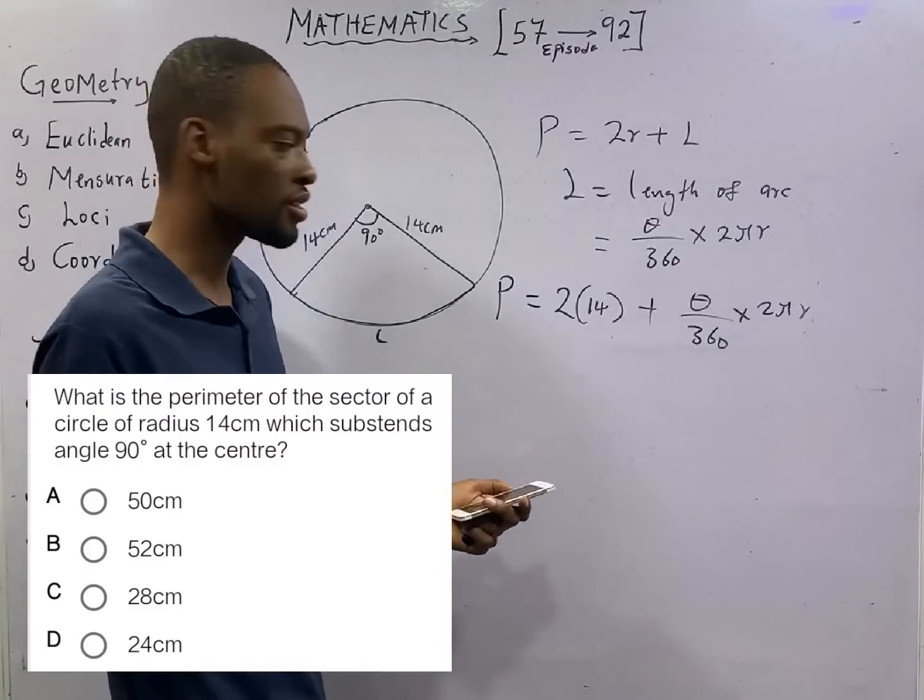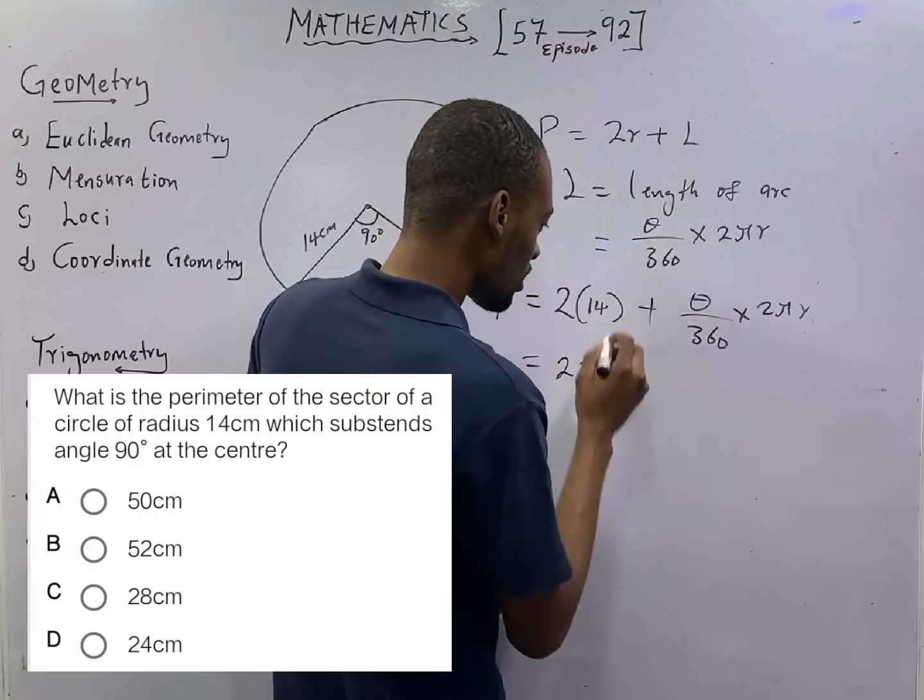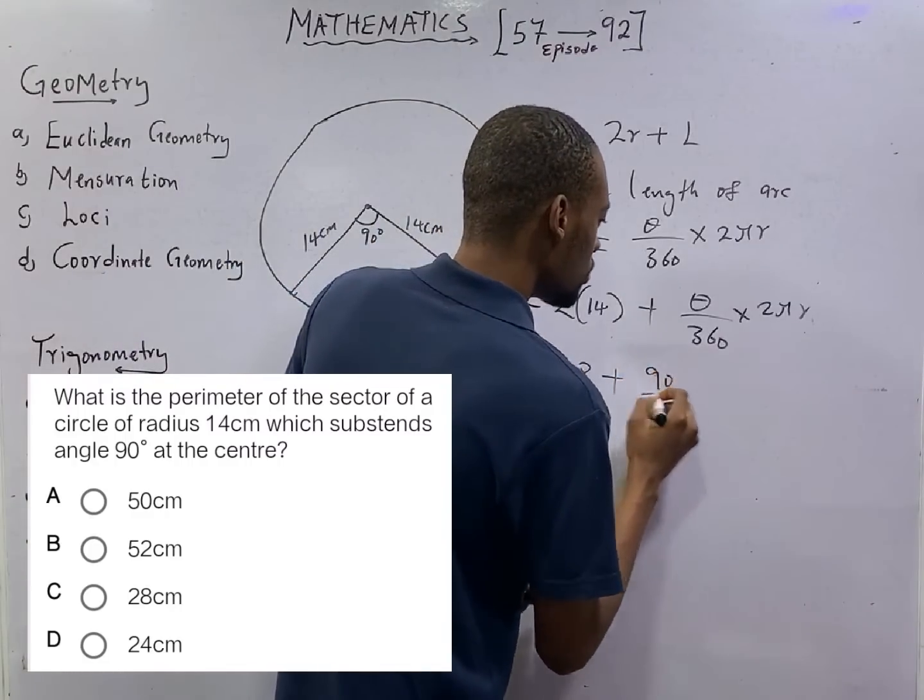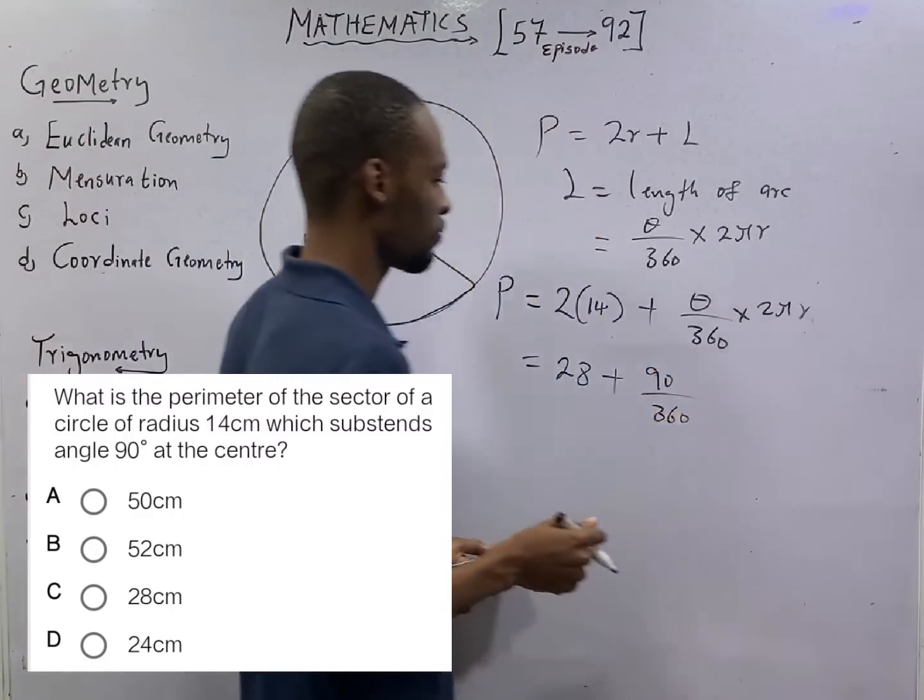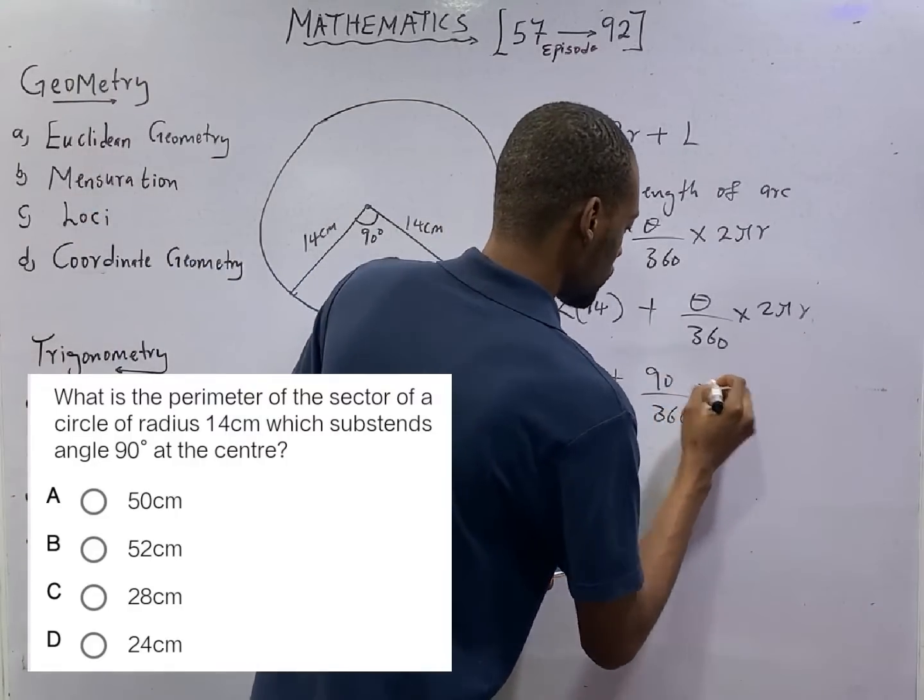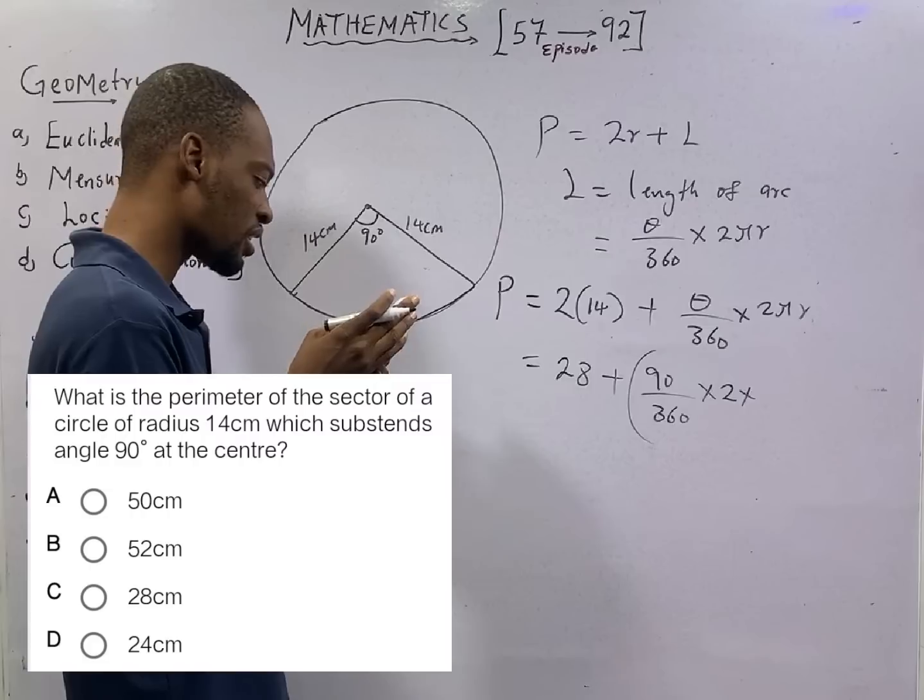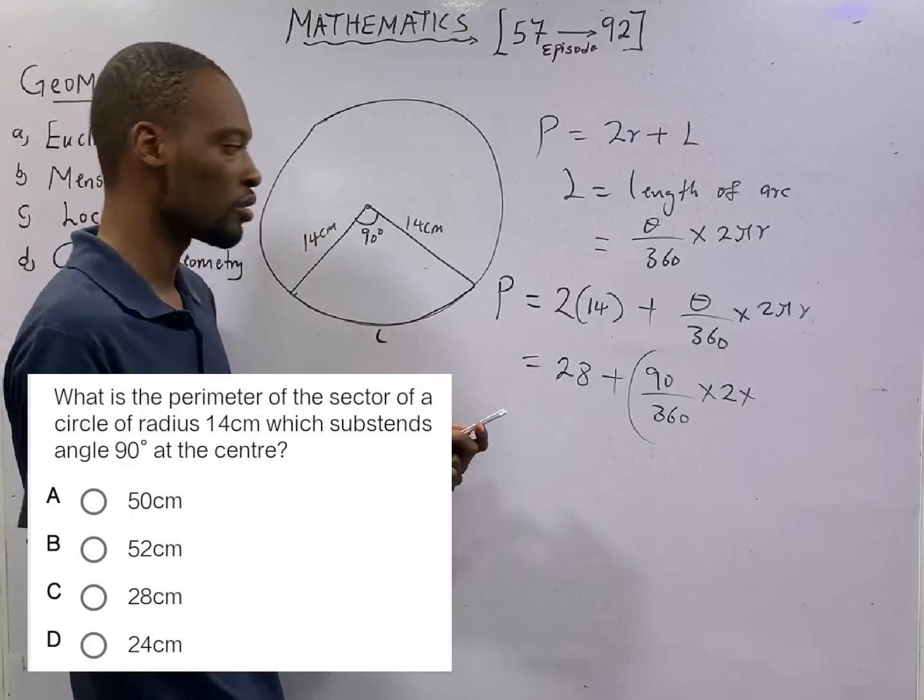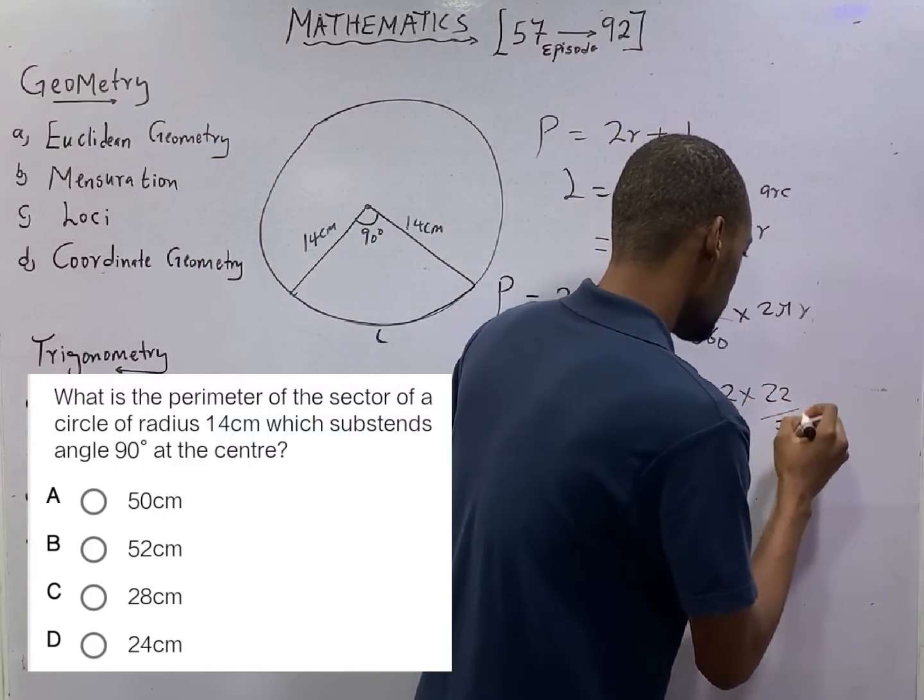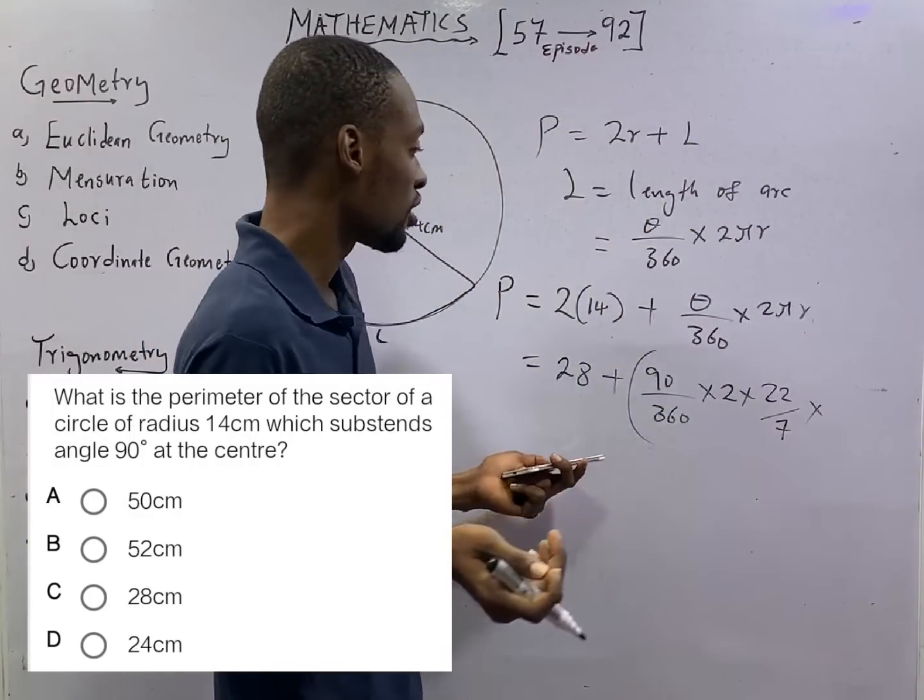Substituting, this is 2 times 14. Let's just settle this side. 28 plus theta is 90 degrees. So 90 over 360 times 2 times pi. The question asks us to take pi to be anything. The answer is not in terms of pi. So we need to put the value of pi, which is obviously 22 over 7. Then times R, radius once again. And radius is 14.